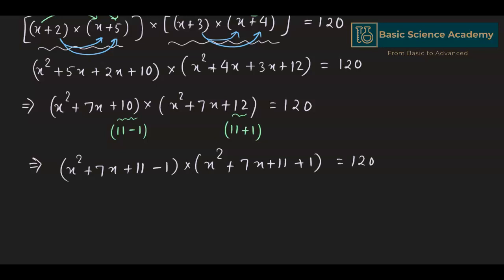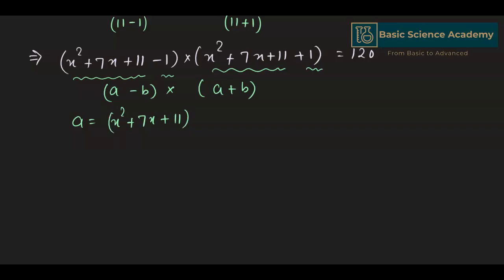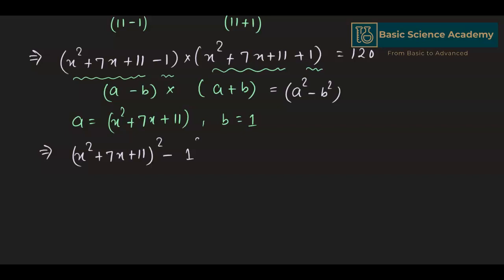This equation is in the form of (a − b)(a + b), where a is (x² + 7x + 11) and b is 1. Applying the identity (a − b)(a + b) = a² − b², this gives us (x² + 7x + 11)² minus 1² equals 120, which means (x² + 7x + 11)² − 1 = 120.